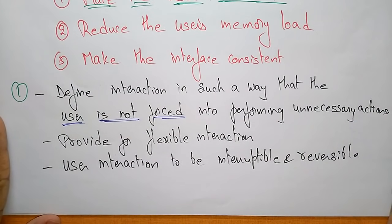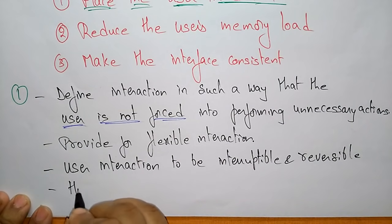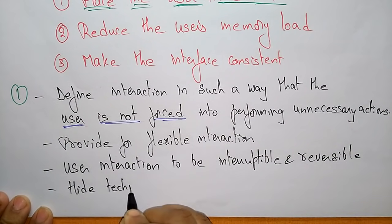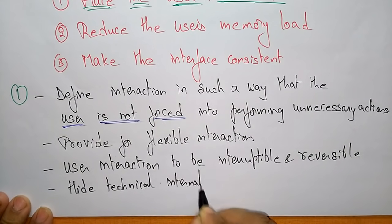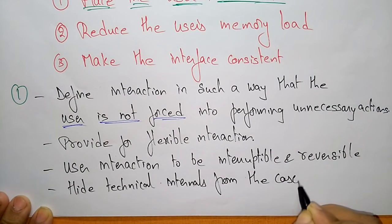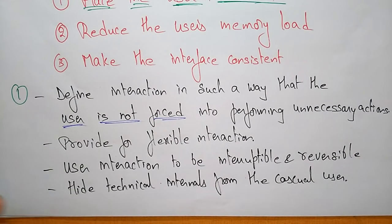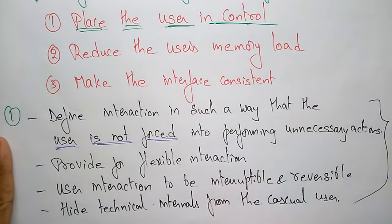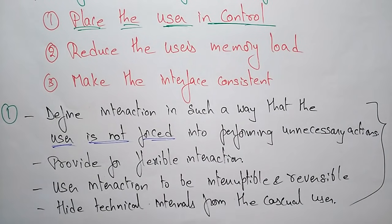Also, hide technical internals from the casual user. Some people simply want to access the app — those are casual users — so try to hide technical details from them. Additionally, design for direct interaction with objects that appear on the screen. These are the main ways to place the user in control.